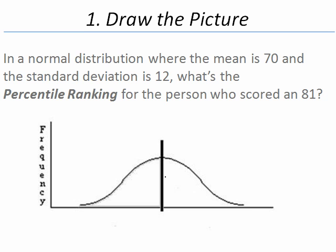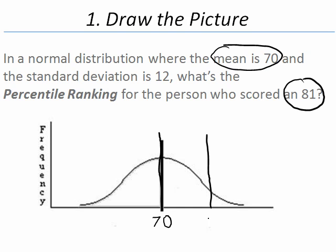When we draw the picture, we're going to want to indicate the mean, which is going to be right there in the middle of the distribution. We have a line representing that. We're also going to want to put the value, 81. And we want to shade in the area of interest, that is, the percentage of people who scored below 81.